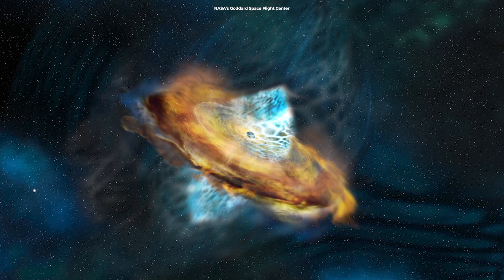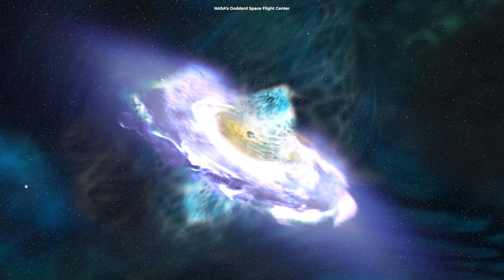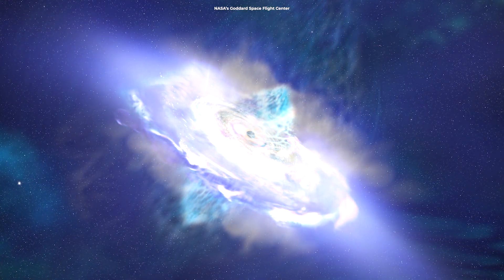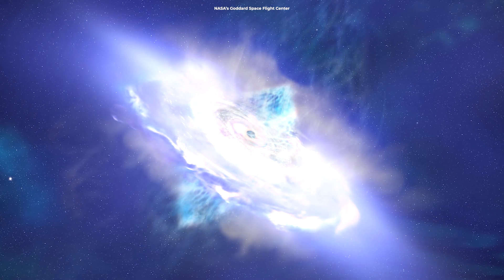A spinning black hole will drag on the field and twist it into a tight cone at the poles. This twisted field accelerates particles away from the black hole as jets and in the process draws energy from the rotation of the black hole.